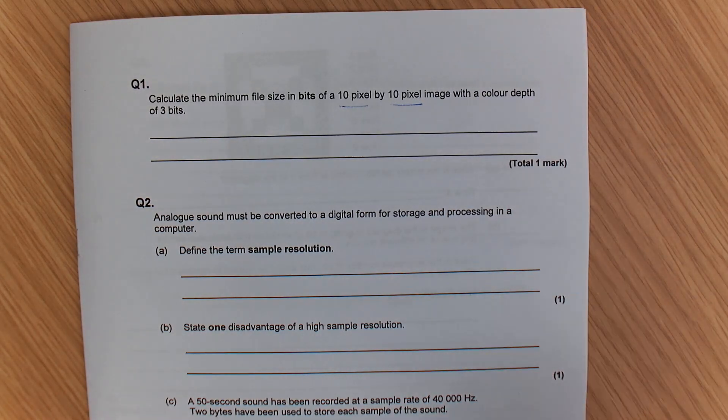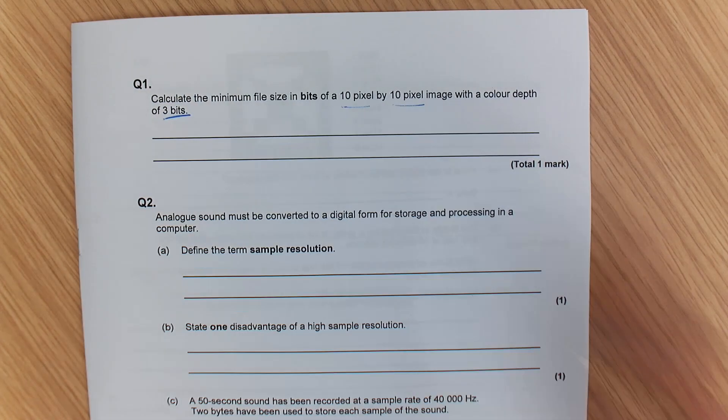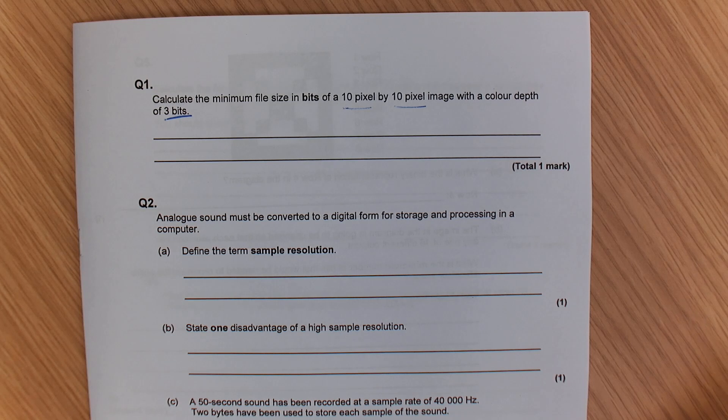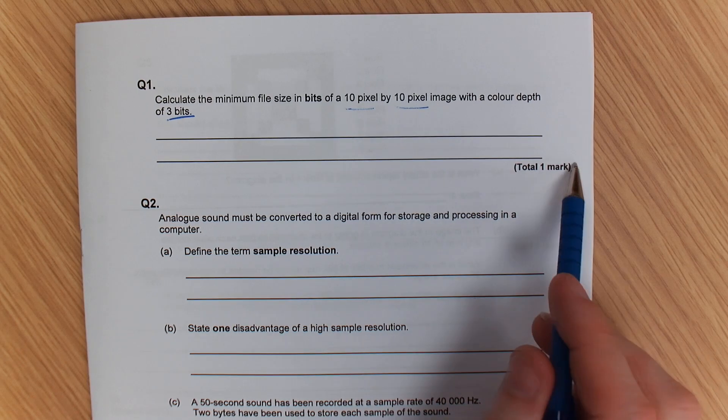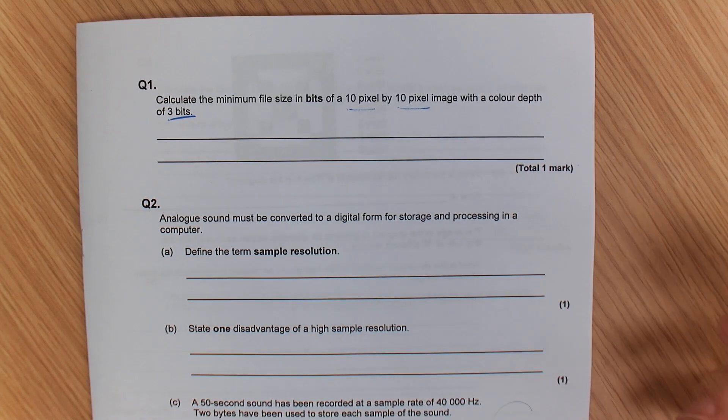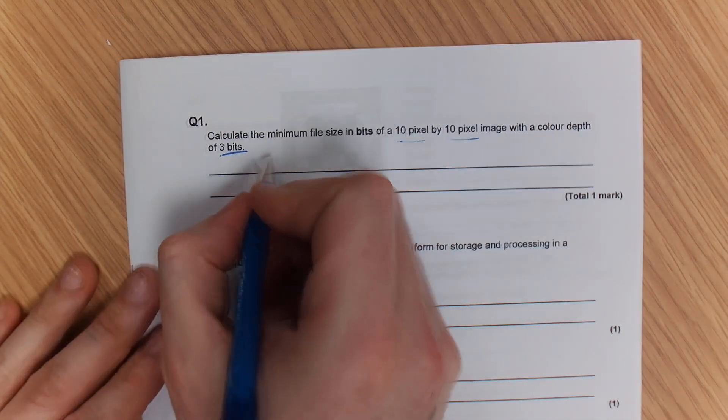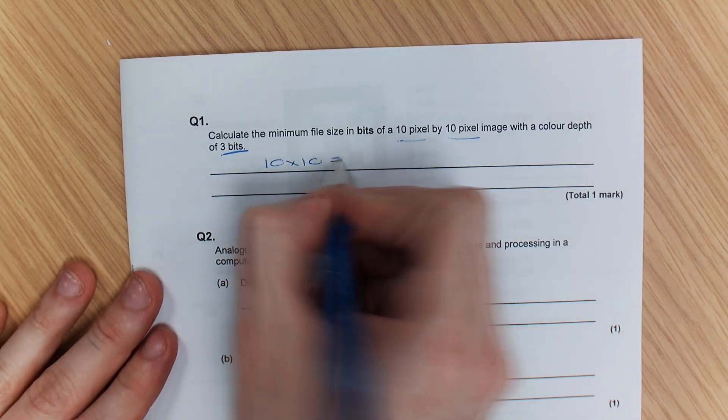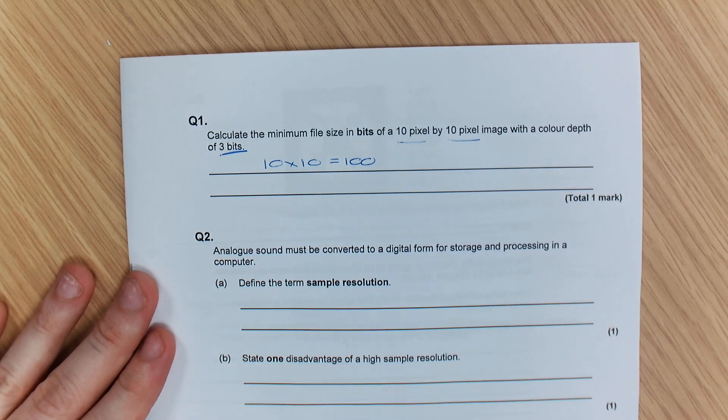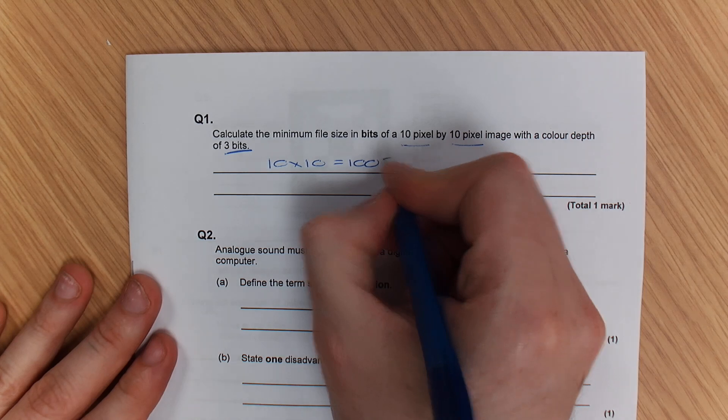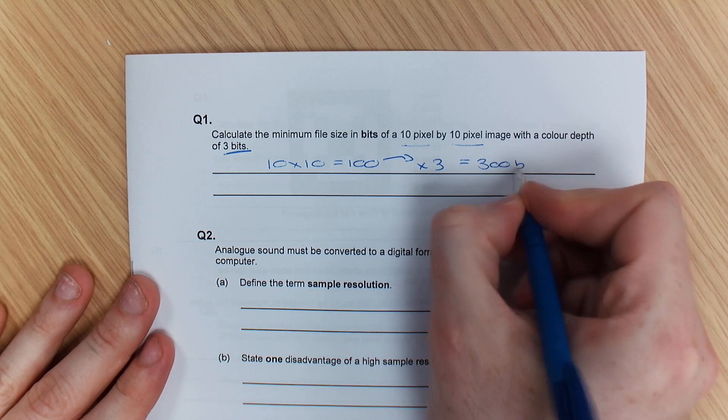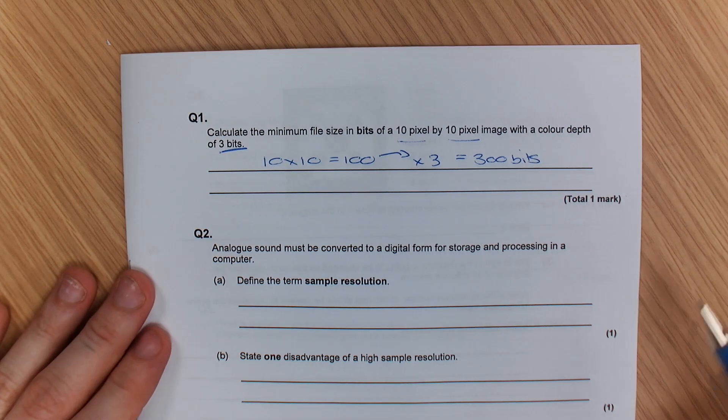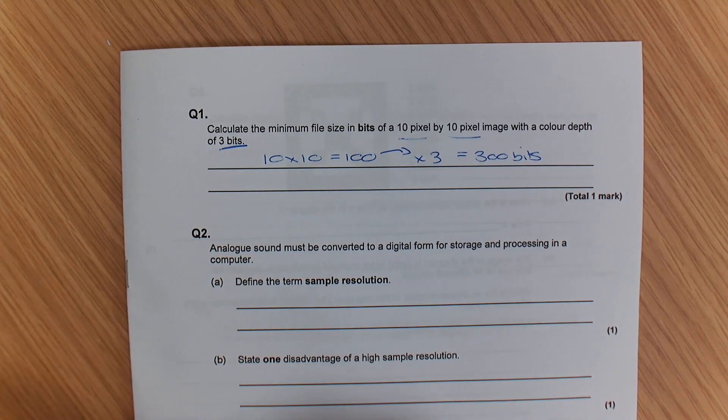So how would we work that out? It says it's a color depth, there's 3 bits. Yeah, so you know that there's 3 bits per pixel, and there's 100 pixels because it's 10 squared. Now that's obviously a one marker, but in general what I'd expect you to do is show your working out. So 10 times 10 is 100, and how many possible bits are there? There's 3, so times by 3, that means there are 300 possible bits available.